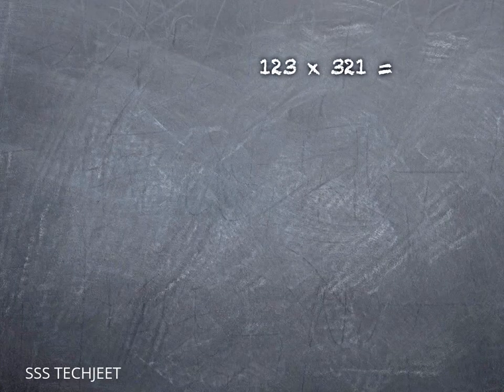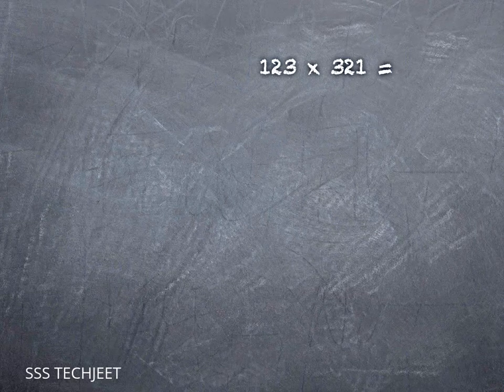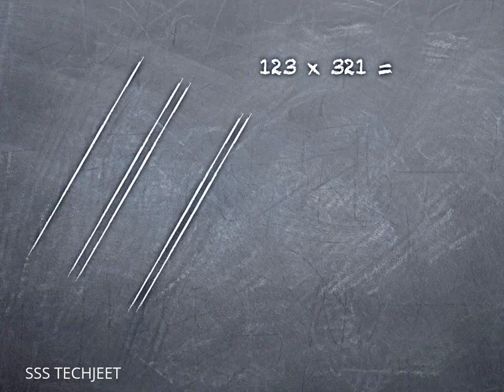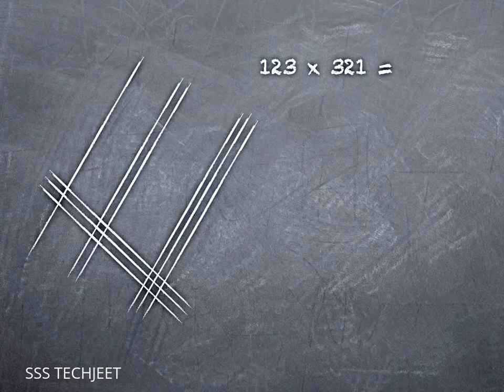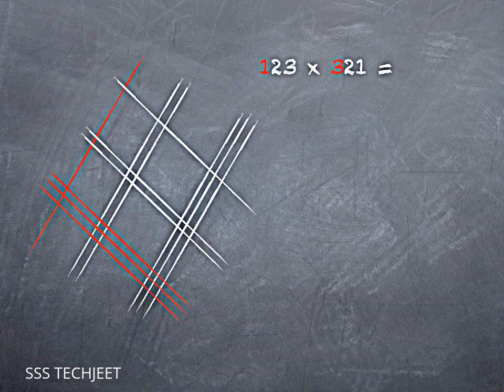If we want a little bit trickier problem, one that requires regrouping, we can try 123 times 321. There's three hundreds, two tens, and one one. And let's color code them again. Hundreds, tens, ones.